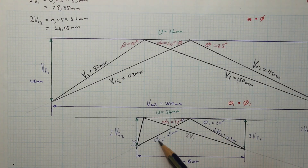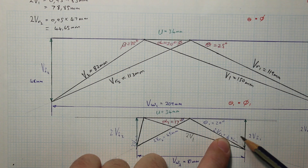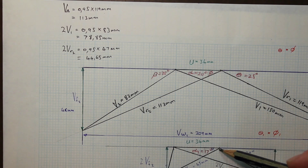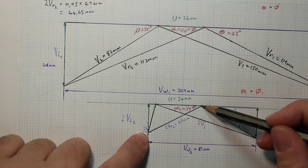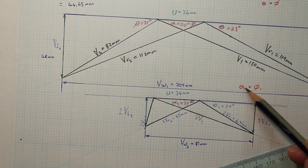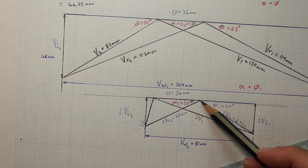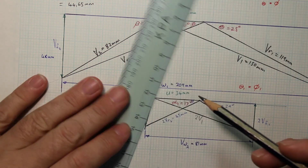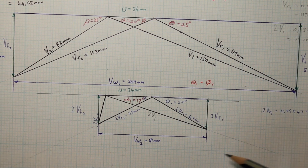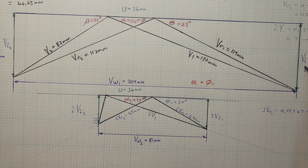For the second row, 2VR1 is found by joining those two points and measuring off. Then 2VR2 equals 0.95 times 47, giving 44.65 — rounded to 45 millimeters. Since theta equals phi for the second row as well, I used the measured inlet angle to draw the outlet. Finally, I joined the last two points to get 2V2. From the complete diagram you can read off whirl and flow velocity components as needed.